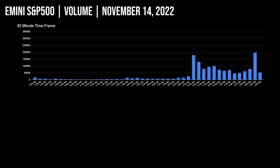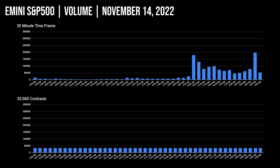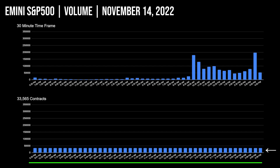Let's look at an example using the S&P 500 futures contract for December 2022, focusing on volume for now. The top chart shows volume based on the 30-minute time frame. The bottom chart shows the same day but with volume bars built based on a fixed volume — in this case, 33,565 contracts per bar. Just like how you can select any time frame, you can select any number of contracts per bar. Notice the irregular time intervals on the bottom chart and the uniform size volume bars.